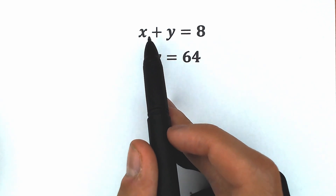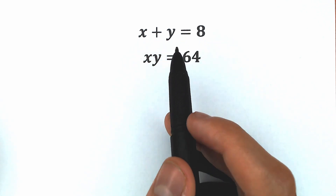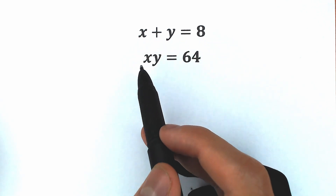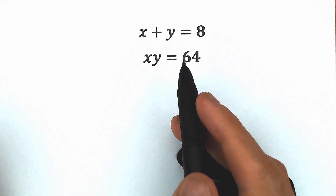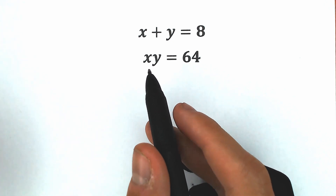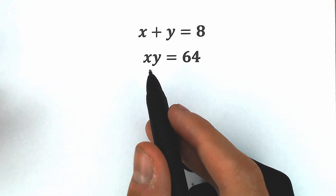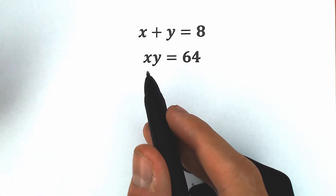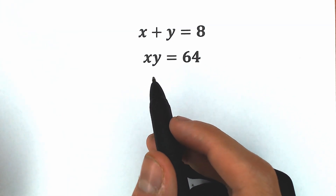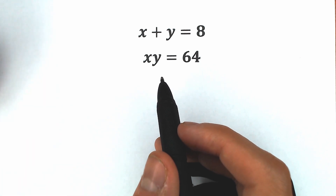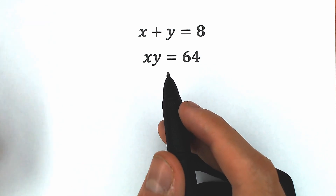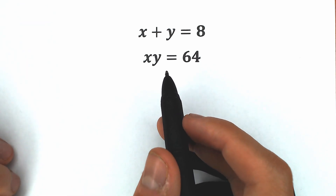We know that x plus y equals 8. We know the product x times y equals 64, and we need to find x and y. If you have your own solution or assumption, write it down in the comment section and we will check our answers here in just a few minutes. It will be really interesting.